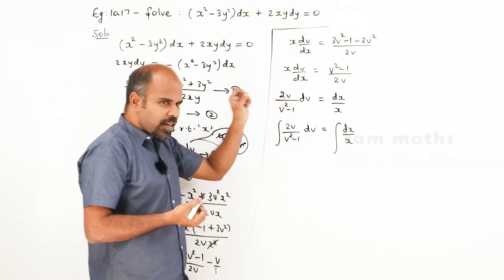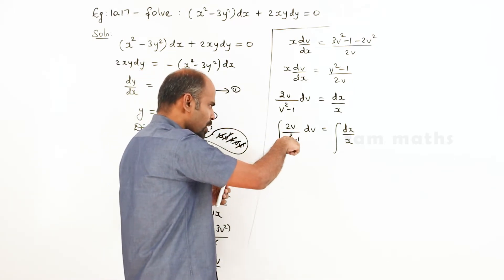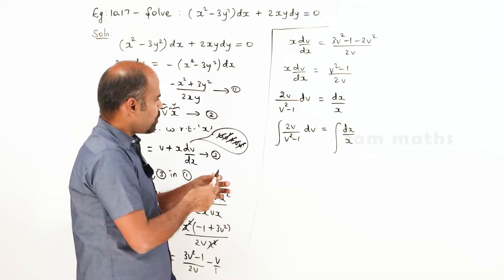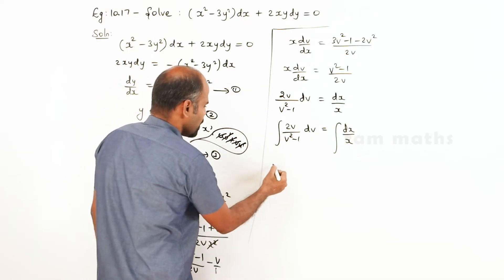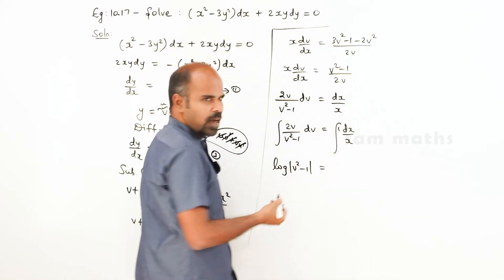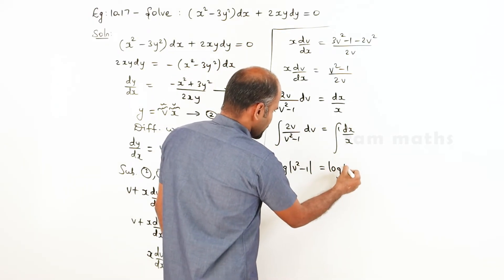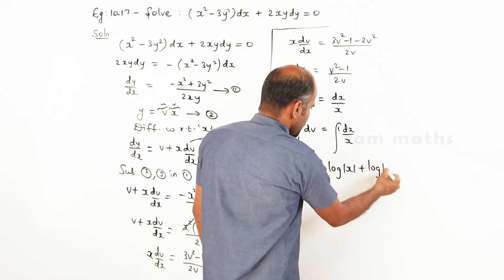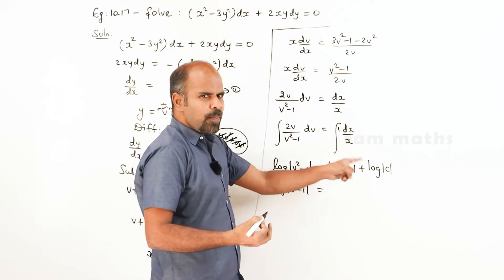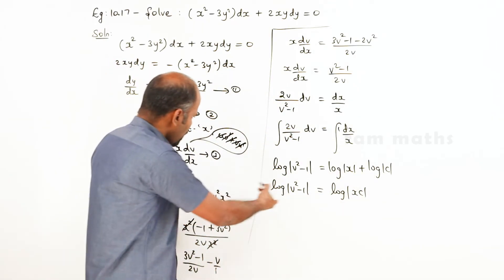For the left integral, differentiate the denominator v² minus 1, which gives 2v. Since the numerator is exactly 2v, this is of the form f'/f, giving log of denominator. So log|v² minus 1| equals log|x| plus log c, which equals log|cx|.